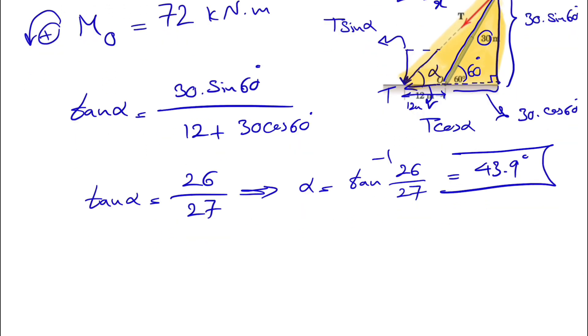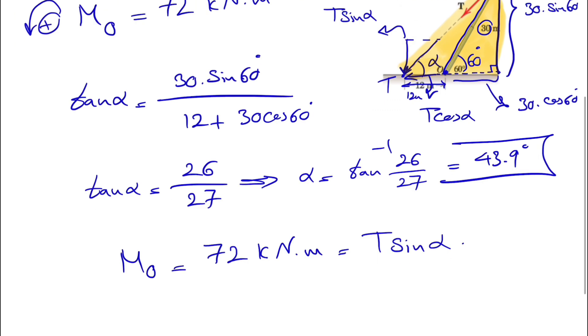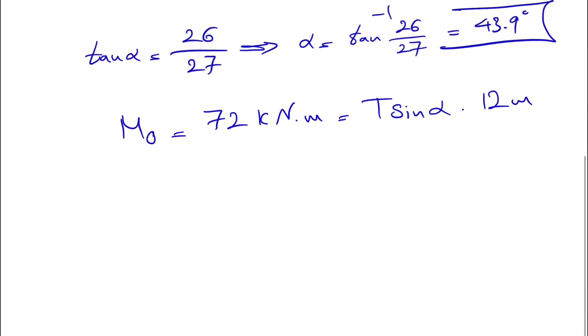So now that we have this, we can find the moment, which we know is 72 kilonewton meter. And basically we have T sine of alpha times the R that we have in here, which is from O to the end of the line of action crossing the horizontal. So that would be 12 meter. So the only unknown that we have in here is T, which would be 72 divided by 12 times sine of 43.9 degrees.